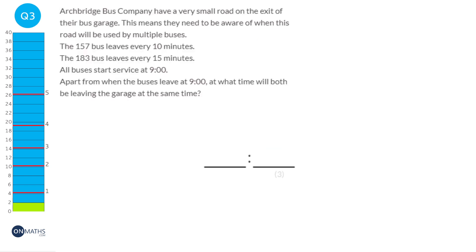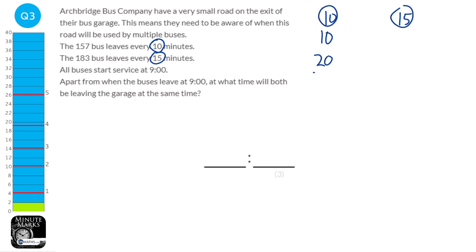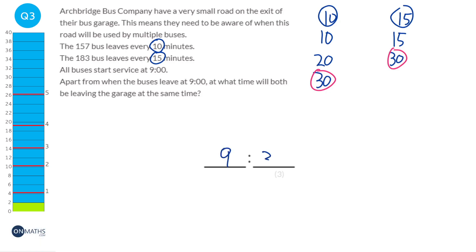To answer this question, we need to find the lowest common multiple of 10 minutes and 15 minutes. Starting with the 10 and 15 times tables: 10, 20, 30, and 15, 30 — the lowest common multiple is 30. So after half an hour these buses will sync up and both leave at the same time. All buses start at 9 o'clock, so they next meet at 9:30.